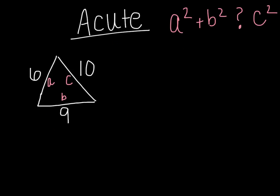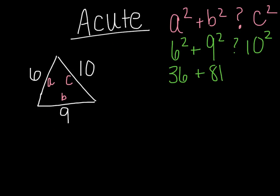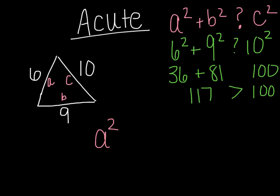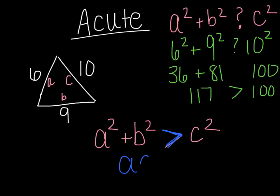In this example, A squared will be 6 squared, and we'll be adding 9 squared, and we'll see how that compares to 10 squared. So we're looking at 36 plus 81 compared to 100. And 36 plus 81 is 117, and that's greater than 100. So when A squared plus B squared is greater than C squared, it's going to result in an acute triangle every single time.